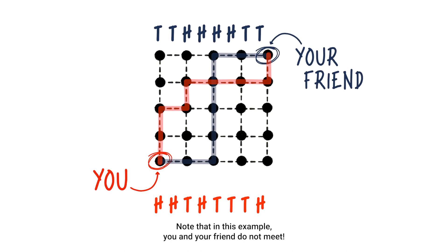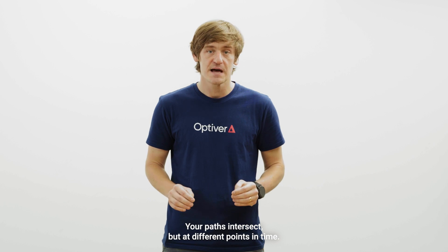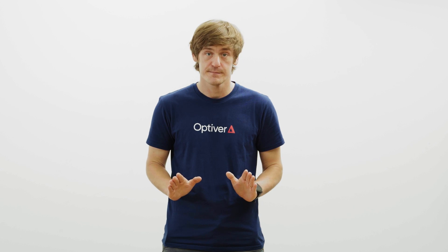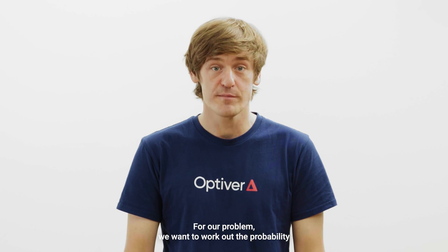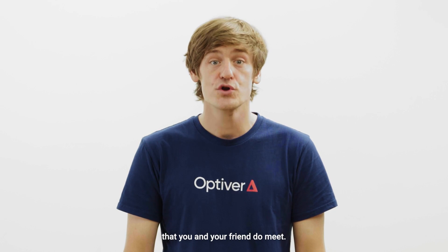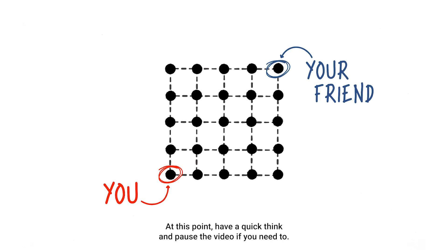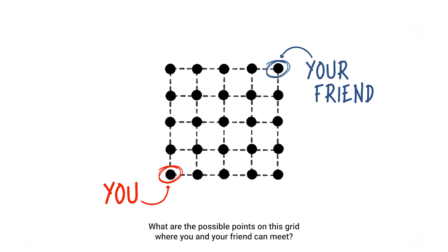Here's an example of the paths that you and your friend might take as you both stroll towards the other person's office. Note that in this example, you and your friend do not meet. Your paths intersect, but at different points in time. For our problem, we want to work out the probability that you and your friend do meet. At this point, have a quick think and pause the video if you need to. What are the possible points on this grid where you and your friend can meet?